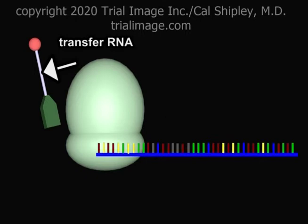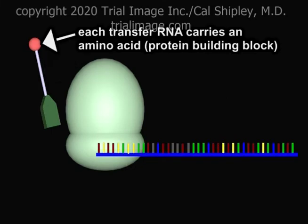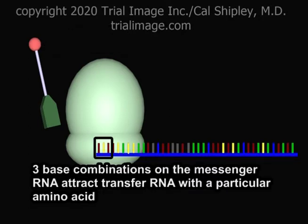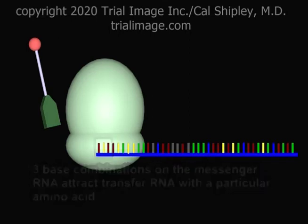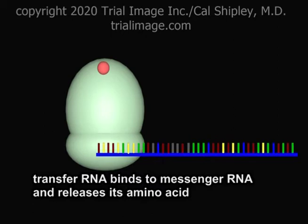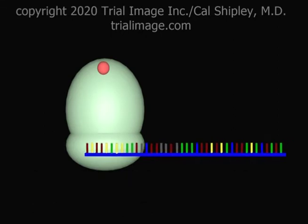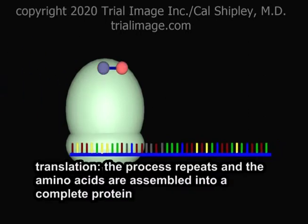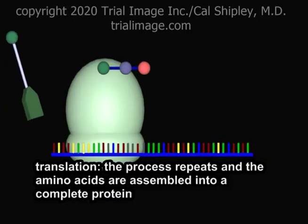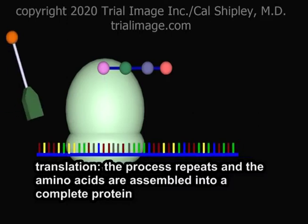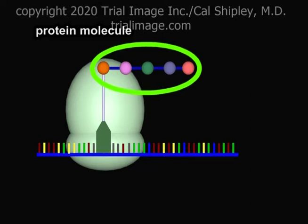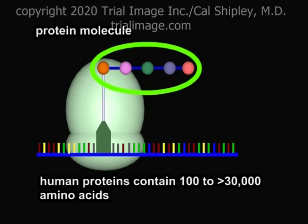The ribosome facilitates the assembly of proteins via another kind of RNA known as transfer RNA. Each transfer RNA molecule carries a particular amino acid. Amino acids are the building blocks of protein. In the ribosome, three-base combinations on the messenger RNA strand attract transfer RNA molecules with a particular amino acid attached. The transfer RNA binds to the messenger RNA and releases its amino acid. This process, known as translation, repeats, and the ribosome assembles the amino acids into a complete protein. The smallest proteins in the human body contain at least 100 amino acids, and the largest comprise a chain of over 30,000.